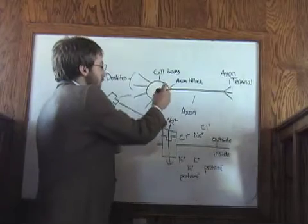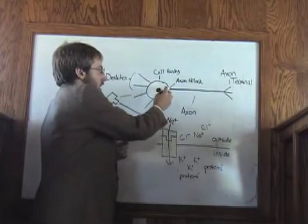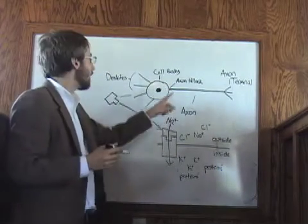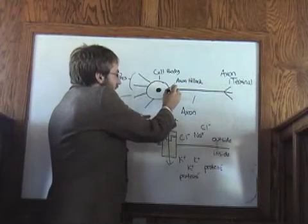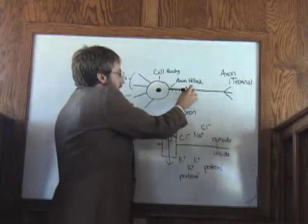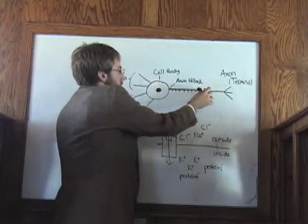And so there's that first voltage-gated channel, is here at the axon hillock, and then every little distance down the axon, is another voltage-gated channel.